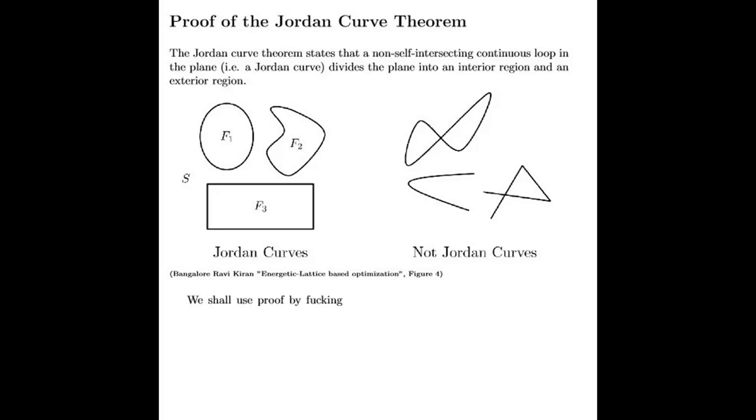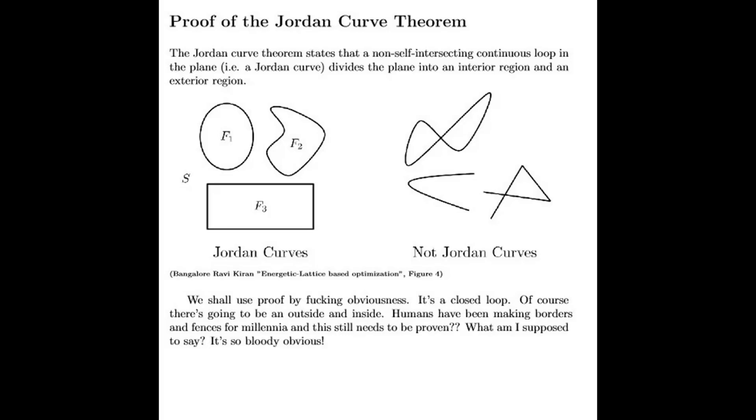We shall use proof by fucking obviousness. It's a closed loop. Of course there's going to be an outside and inside. Humans have been making borders and fences for millennia, and this still needs to be proven?